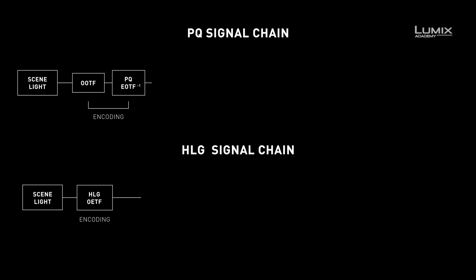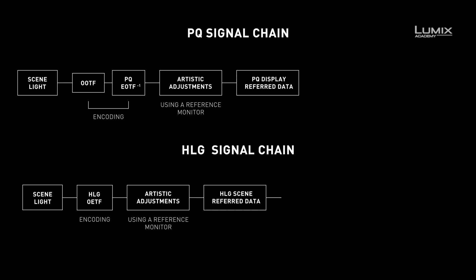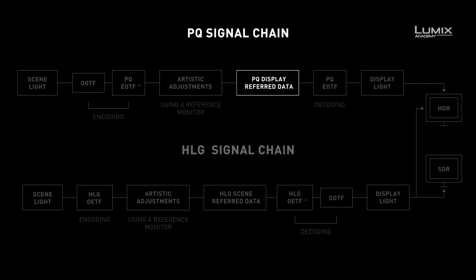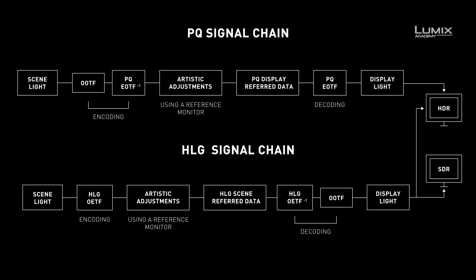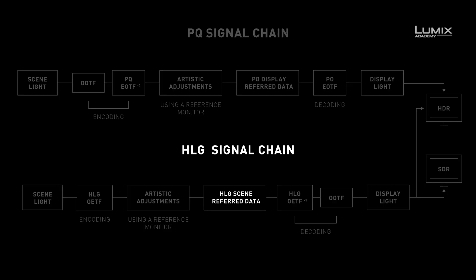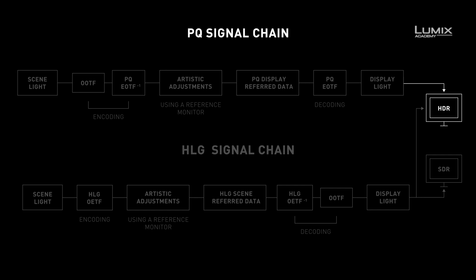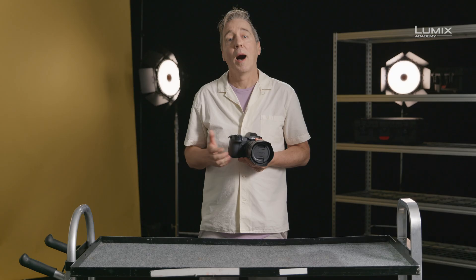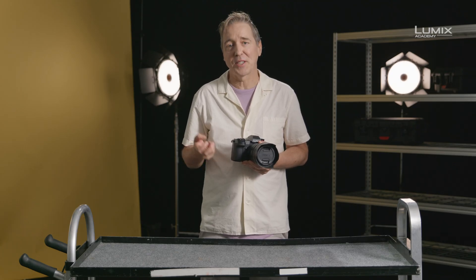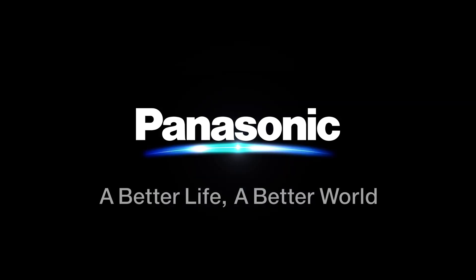What is the difference between PQ, perceptual quantizer, and HLG? PQ signals are absolute values and relate to absolute brightness. HLG is not aimed at any particular screen brightness and is not limited in any way — it is a relative brightness system. PQ also requires an HDR monitor, whereas HLG is compatible with both SDR, standard dynamic range, and HDR in 1000 nits. And that's a quick dive into the current HDR standards.